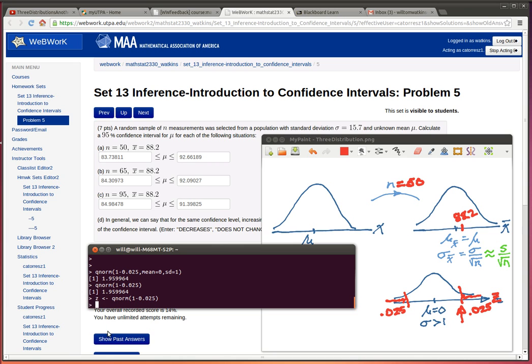Our margin of error... we need to find the standard error, right? The standard error is the standard deviation over here, and we're going to be able to find out what that is because we knew that this is 15.7 divided by the square root of our sample size here, 50. So there's our standard error.